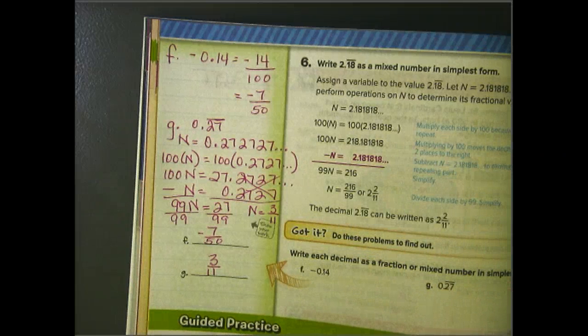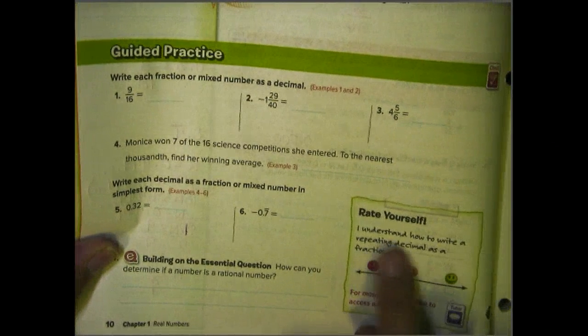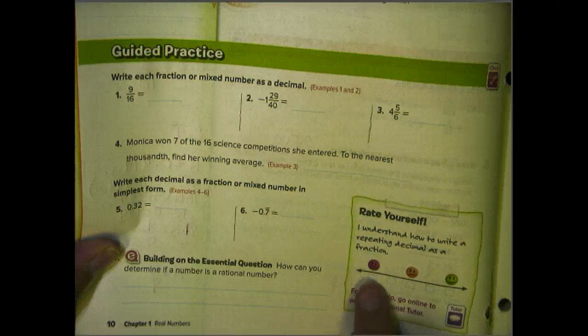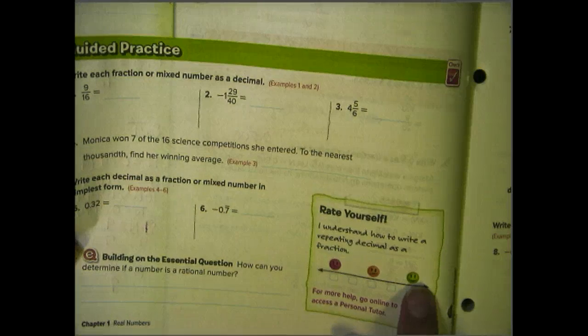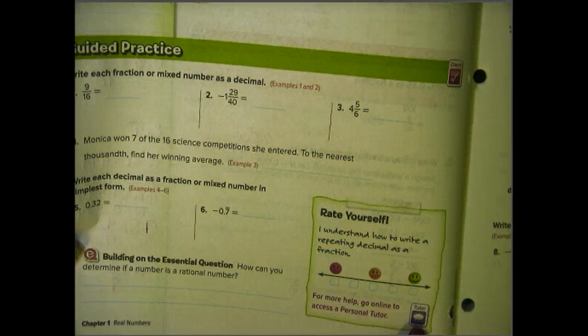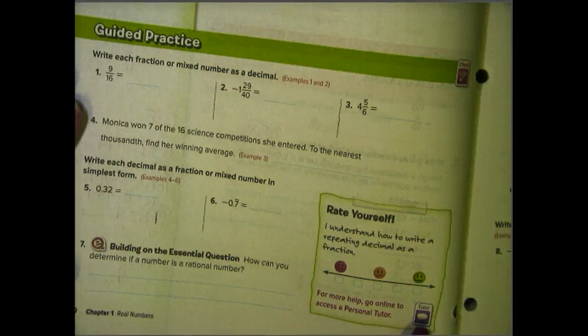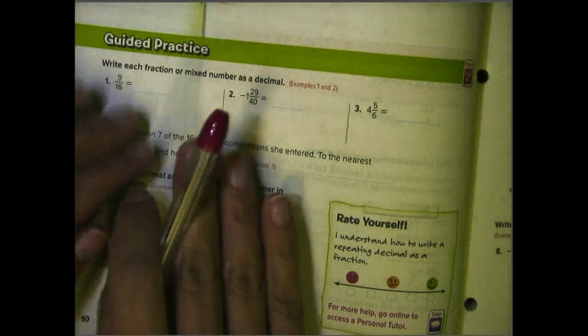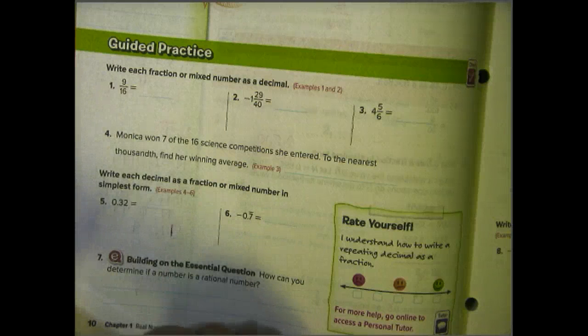I want you to take some time, and I want you to complete problems 1 through 7 down at the bottom of the page. And then I want you to rate yourself on how you understand how to write a repeating decimal as a fraction. Either not very well, kind of, or really well. And then if you need the personal tutor to help you out, there is the little personal tutor section right down here. So go ahead and actually let's not do those problems. We'll do those problems online tomorrow in class. So just go ahead and finish your notes. And when you finish your notes, bring those to class with you tomorrow.